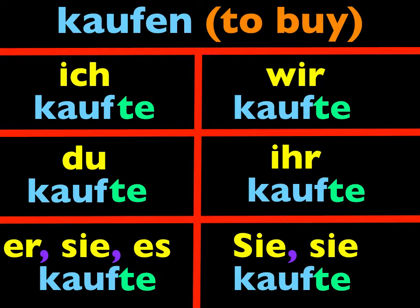The ich form is always the same as the er, sie, and es form for every verb. So all we have to do is add -ST to make the du form, -N to make the wir form, -T for the ihr form, and -N for the sie form, and we have it.